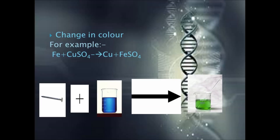Now we will see how there is a change in color when a chemical reaction has occurred. Let's take the example of an iron nail. When an iron nail is dipped in copper sulfate solution, whose color is blue, these two reactants combine to form FeSO₄, that is iron sulfate. The color of iron sulfate is green, which is completely different from the blue color of copper sulfate — so a new substance with a different color has been formed.